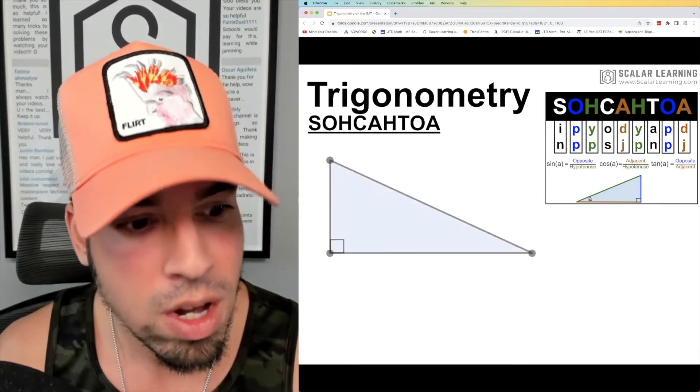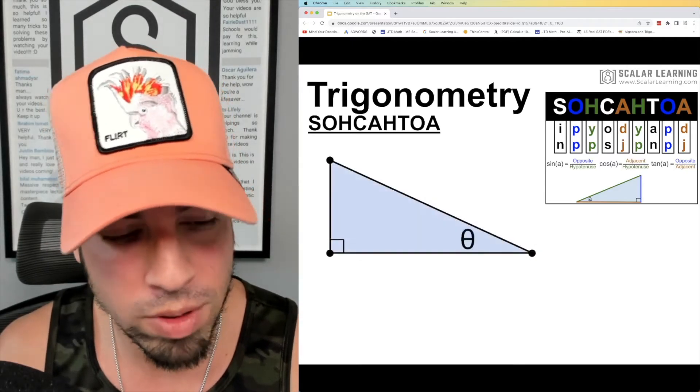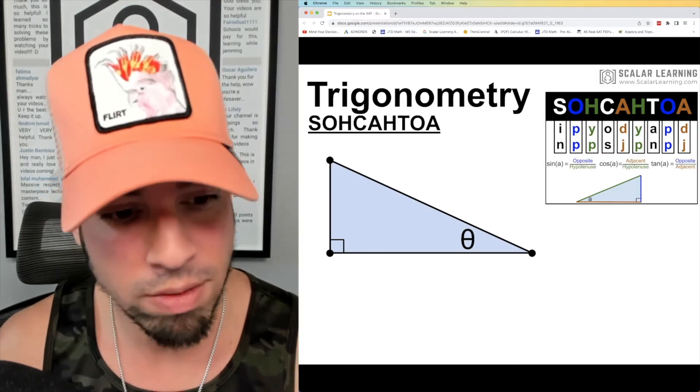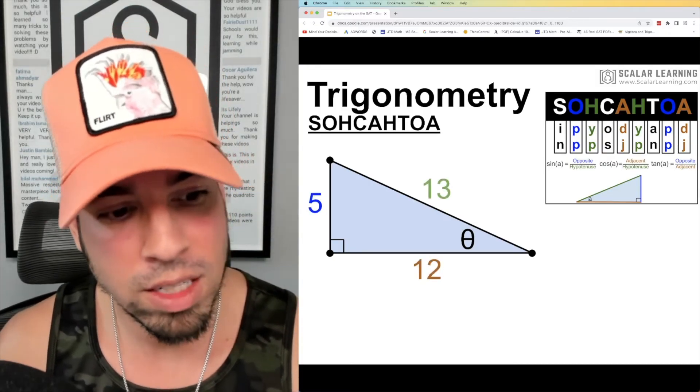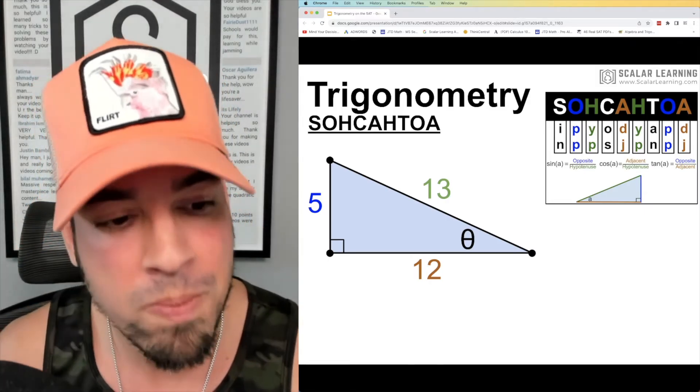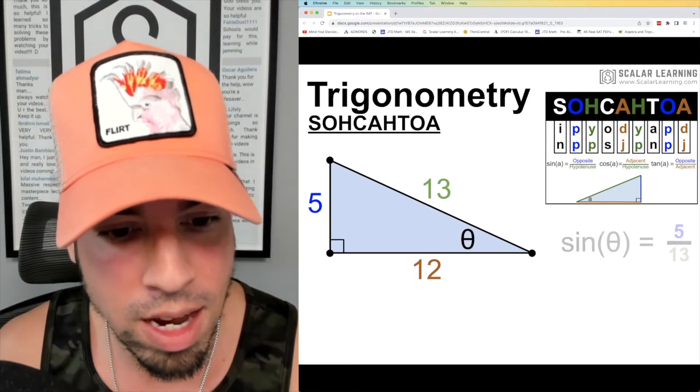Now if we take an example—and again having SOHCAHTOA up in the right hand side as a reference—we take an example of a triangle and we've got this angle theta here. Theta is often used as a variable instead of x for angles, and we've got a nice 5-12-13 right triangle, which is a Pythagorean triple by the way.